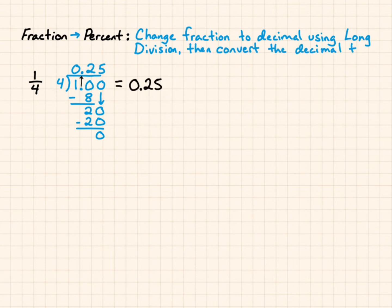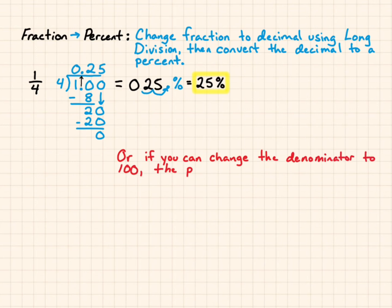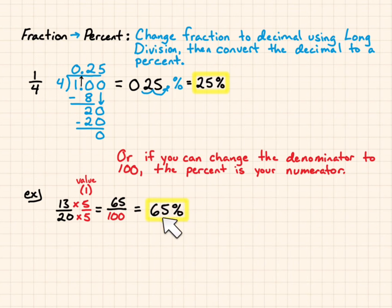So 1/4 is the same as 0.25. Then convert the decimal to a percent. I end up with 25%. Or, if you can change the denominator to 100, the percent is your numerator. For example, 13 over 20. I know I can multiply 20 times 5 to get 100. I also have to multiply the numerator times 5, because you don't want to change the value of the fraction. And 5 over 5 is equal to 1. So you end up with 65 over 100, and 65% is your percent.